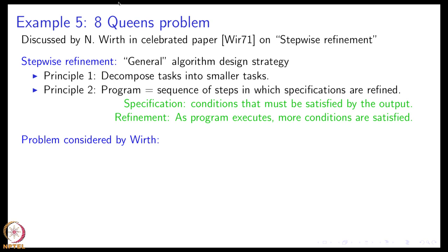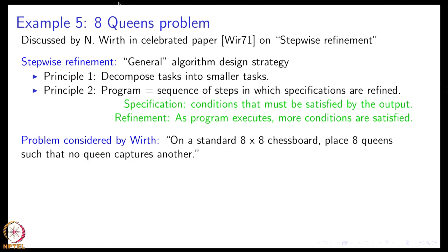So the problem that Niklaus Wirth considered was the 8 queens problem which is that on a standard 8 by 8 chess board we want to place 8 queens such that no queen captures each other.